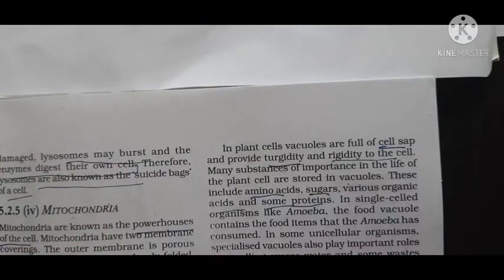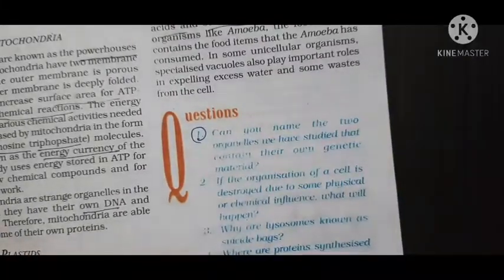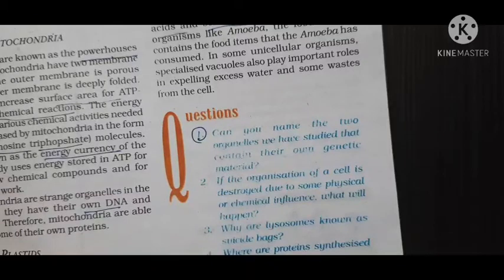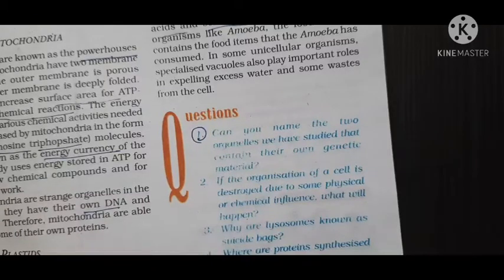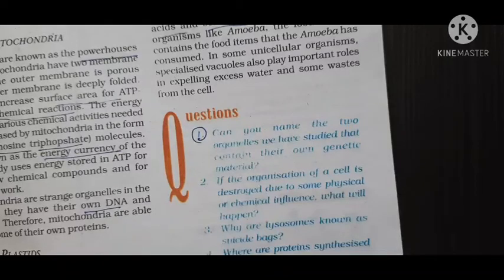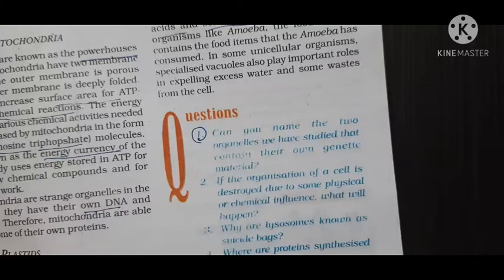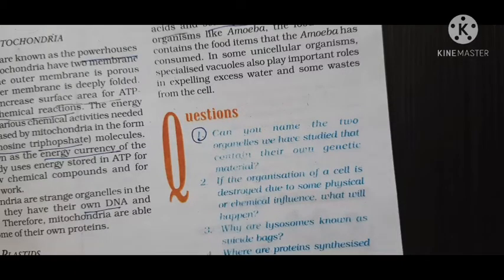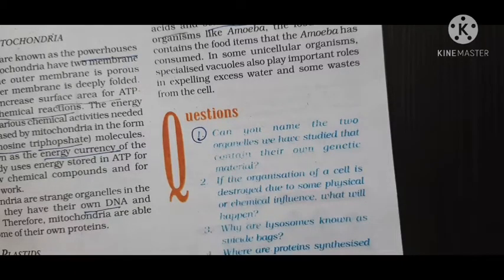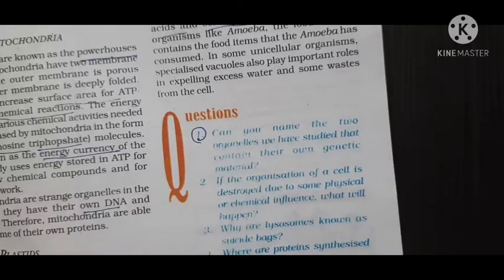Open page number 65. I gave you one homework question: can you name the two organelles we have studied that carry their own genetic material? Question number one. So the two organelles are nucleus and mitochondria. Actually chloroplast also has its own genetic material, but they have asked two organelles. So nucleus and mitochondria.